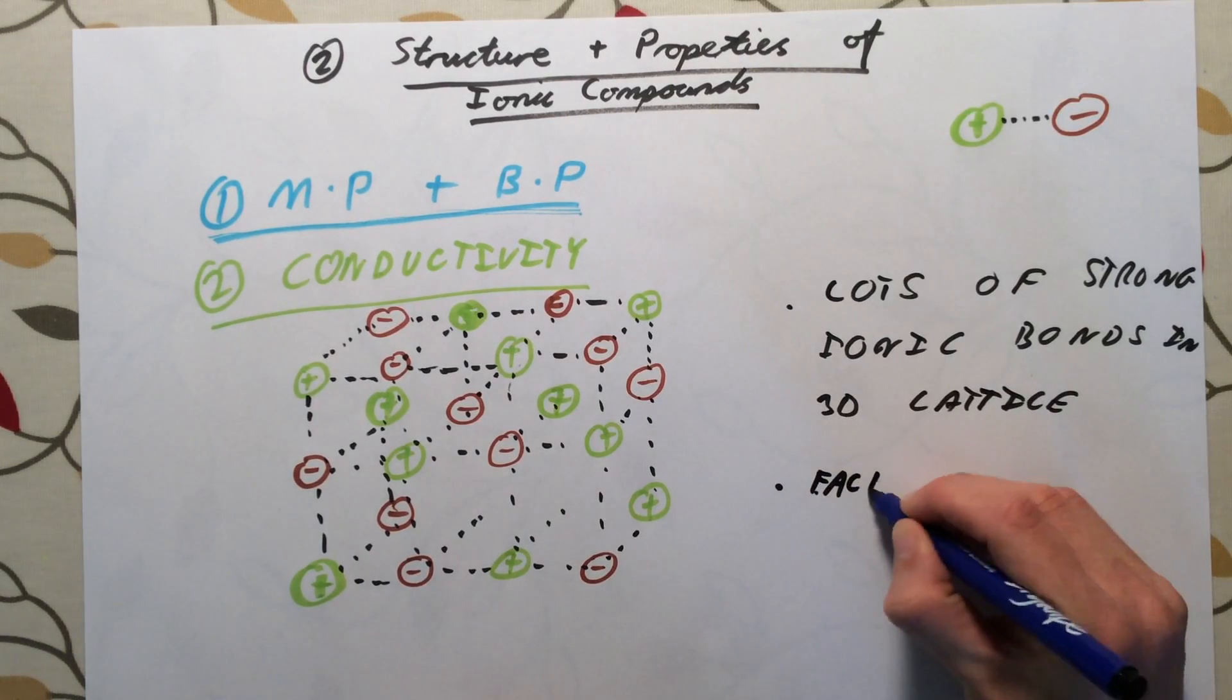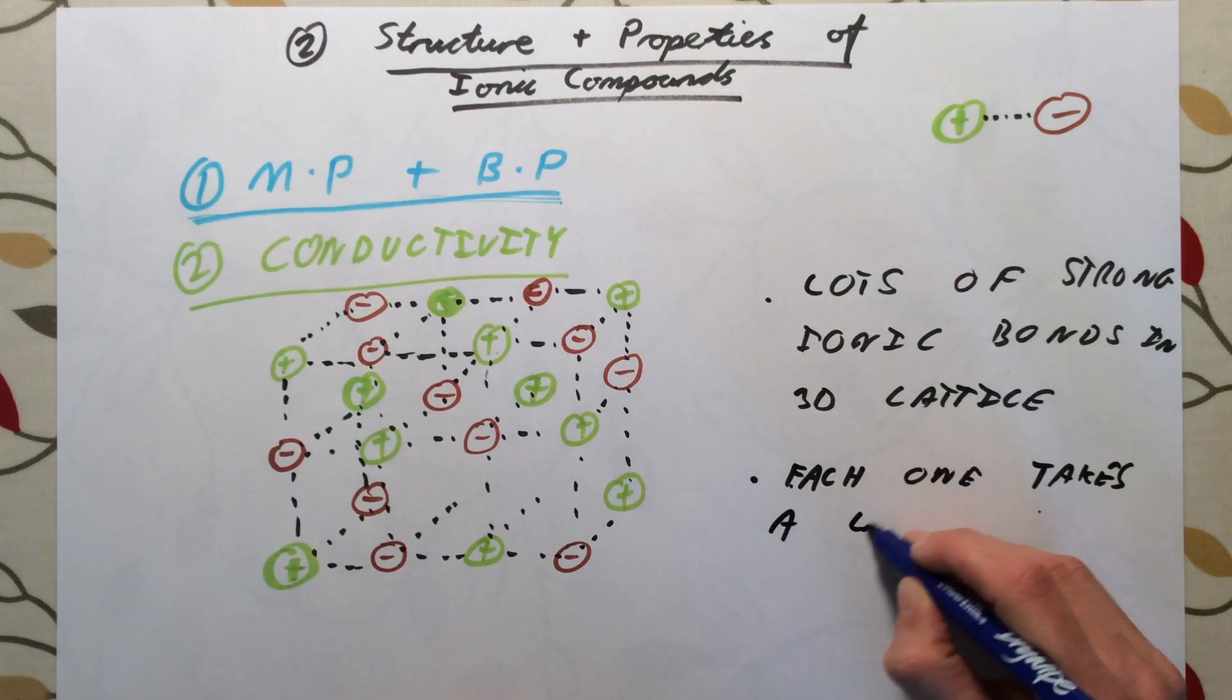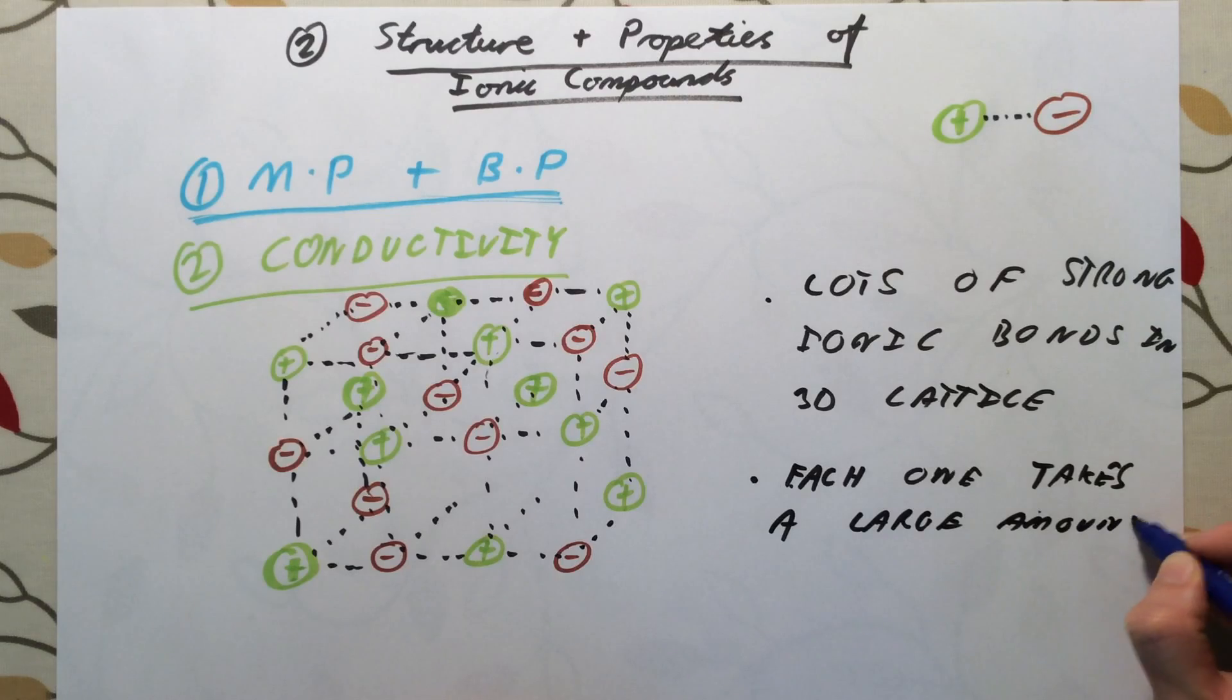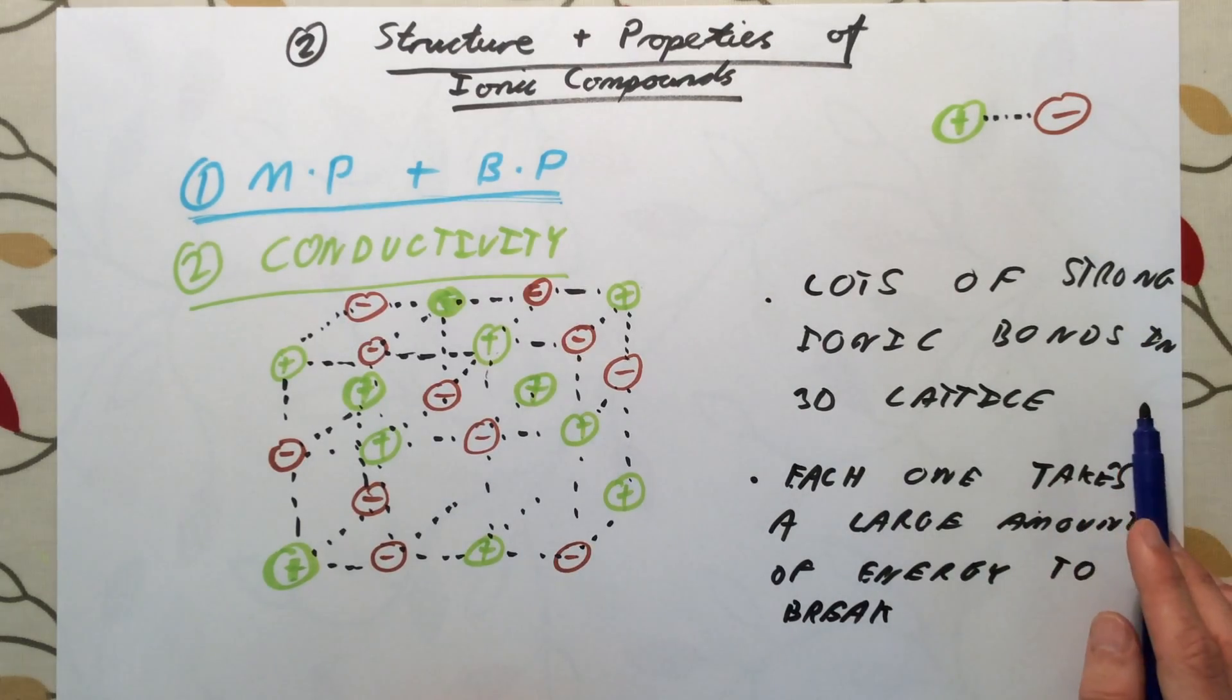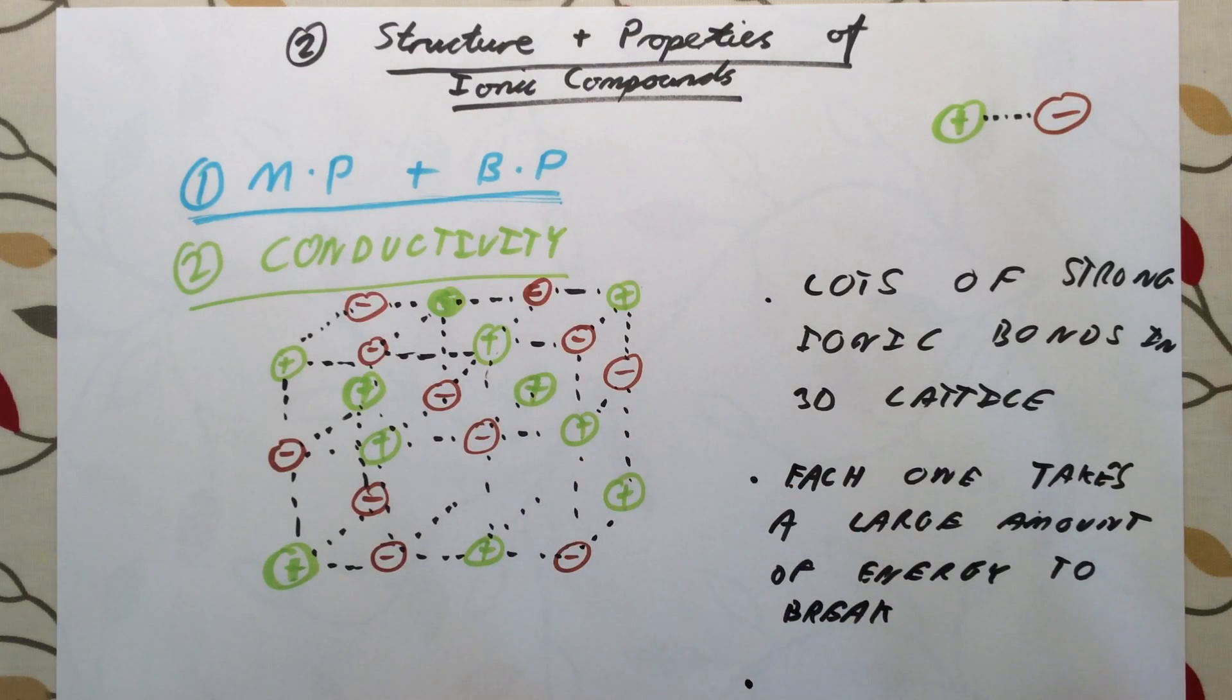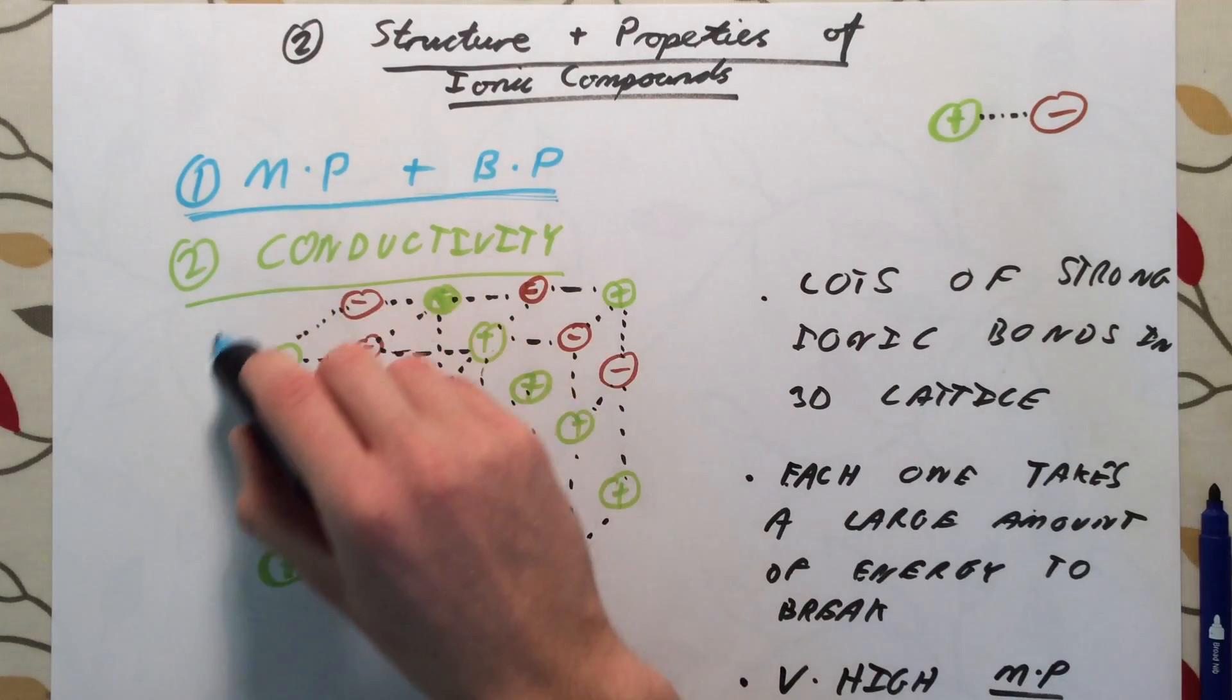Each one takes a large amount of energy to break. Because I've got a large number of strong ionic bonds, each one takes a large amount of energy to break. This is going to give my ionic compound a very high melting point and boiling point. In order to melt or boil this crystal structure, I have to break or overcome all these strong forces, and that takes a lot of energy and requires a high temperature.